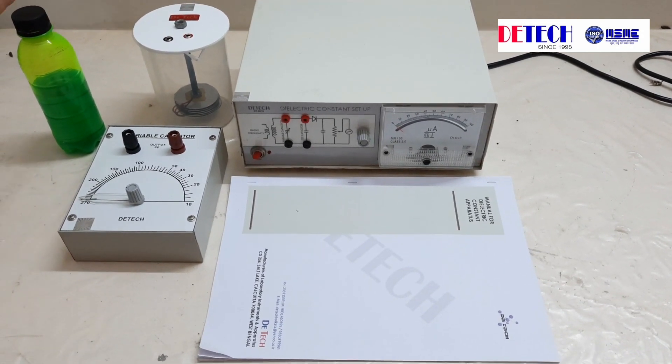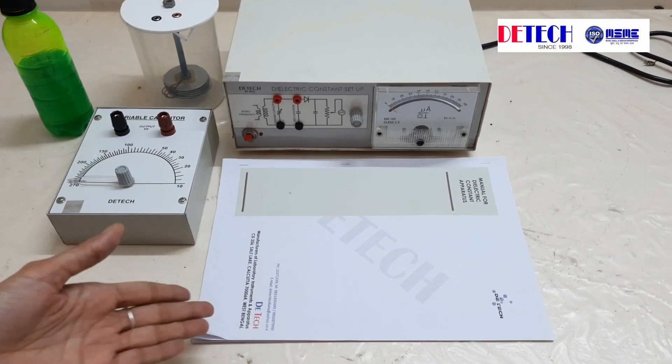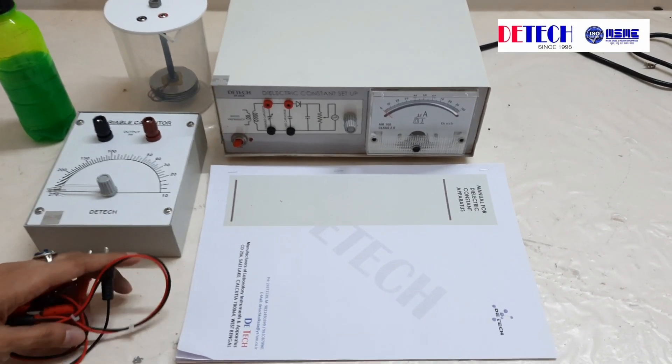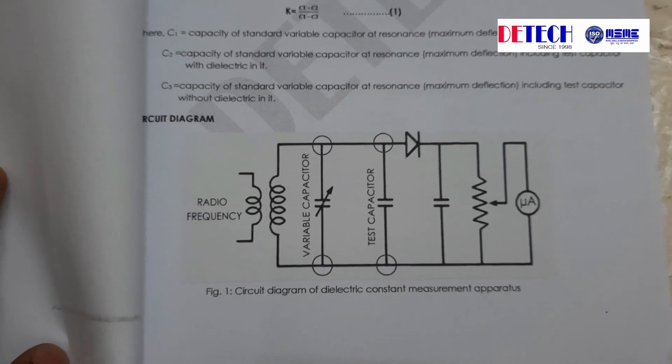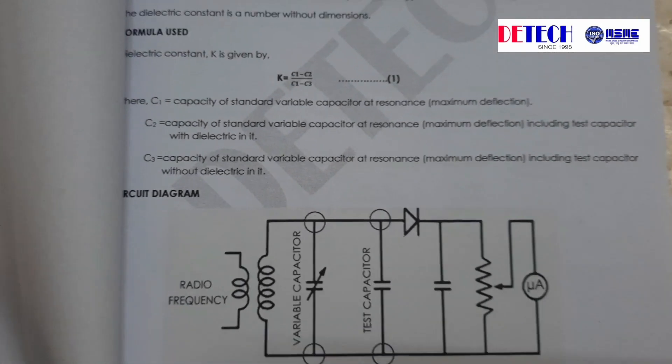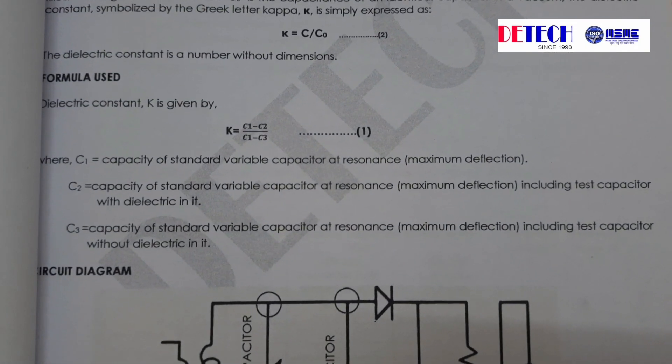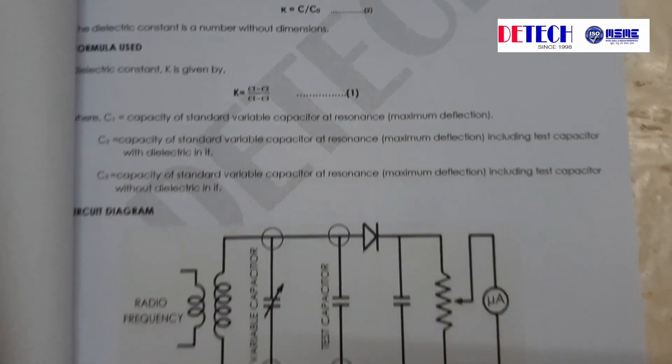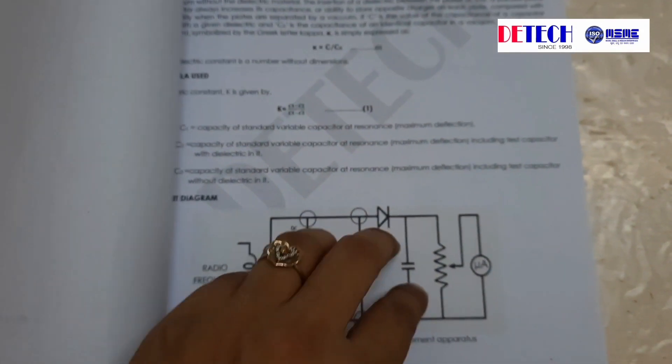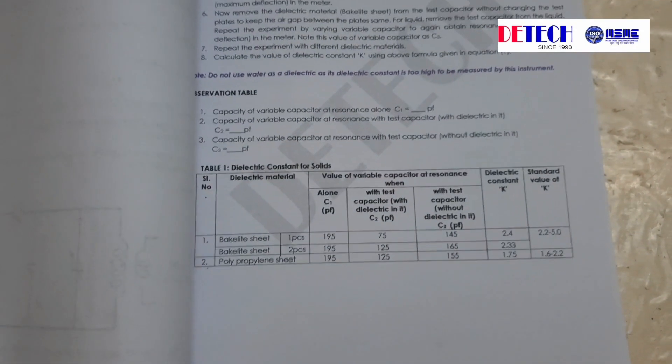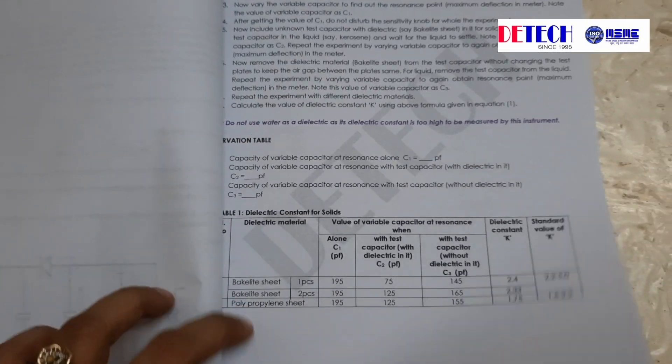The liquid over here is kerosene and we have a manual which is very detailed and has all the procedure and experimental details in it. This is our circuit diagram mainly and we have to find out C1, C2, and C3 as given here. So let us proceed with the experiment. The detailed procedure is given along with observation tables.